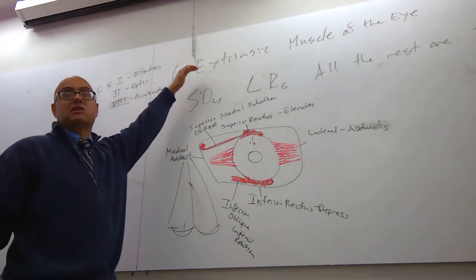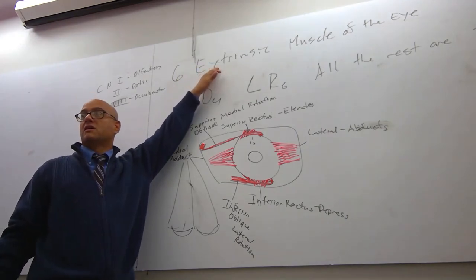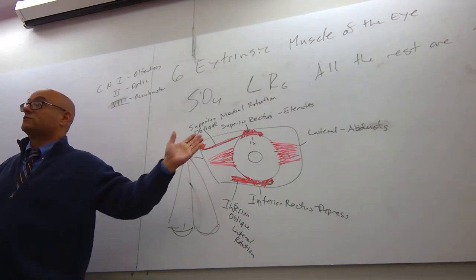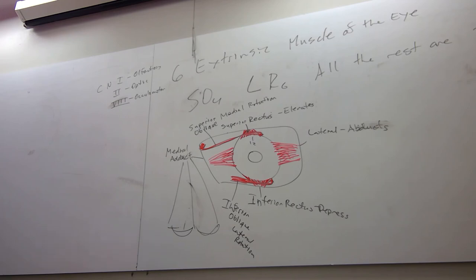Guys, if there's six extrinsic muscles of the eye, what does extrinsic mean? Outside the eye. If there's muscles outside the eye, are there muscles inside the eye? They're called intrinsic muscles of the eye. Would those muscles of the eye be voluntary or involuntary? Involuntary. Smooth muscle or cardiac muscle? It's got to be smooth. What smooth muscle is inside the eye that has something to do with the eye?